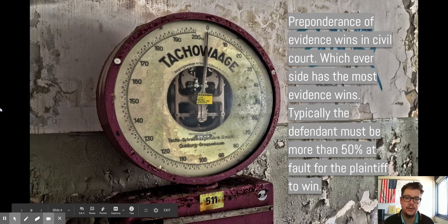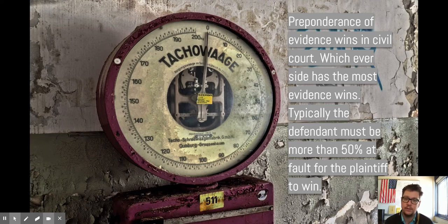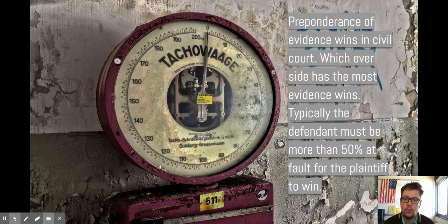When it comes to evidence — how do you actually win your case? It comes down to whichever side, the plaintiff or the defendant, has the most compelling evidence. We call that preponderance of evidence. In criminal court, you must be found guilty beyond a reasonable doubt, which is a much harder feat. In civil court, it's really about the evidence. If the plaintiff is more than 50% at fault, the defense is going to win that case.